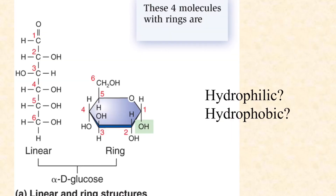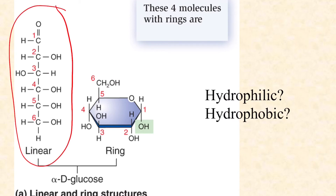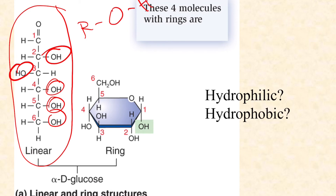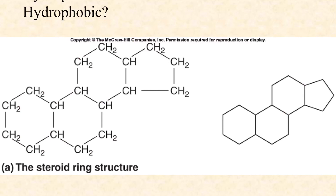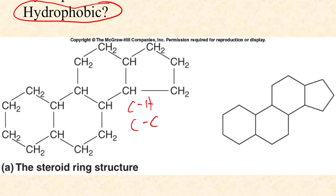Looking at alpha-D glucose in its linear form, we see a lot of OH functional groups. Oxygen is very electronegative, holding onto those electrons and leaving the hydrogen with a partial positive charge. With a lot of polarity at all of these hydroxyl groups, glucose is hydrophilic and dissolves very well. The basic steroid ring structure — like testosterone or cholesterol — has only carbon-to-hydrogen and carbon-to-carbon bonds, which are nonpolar. There are no charges, nothing to draw water to it, so it's hydrophobic.